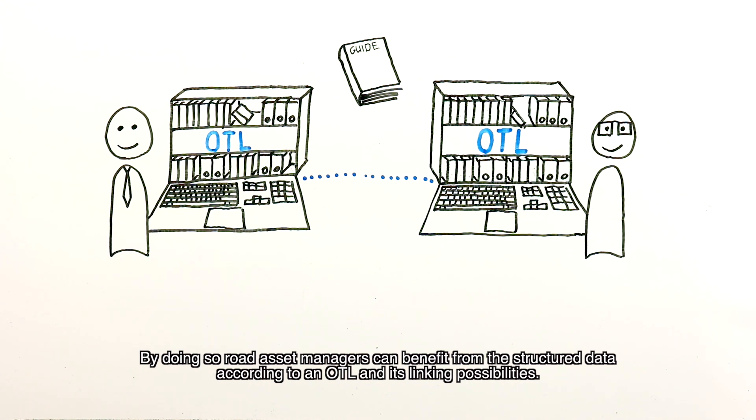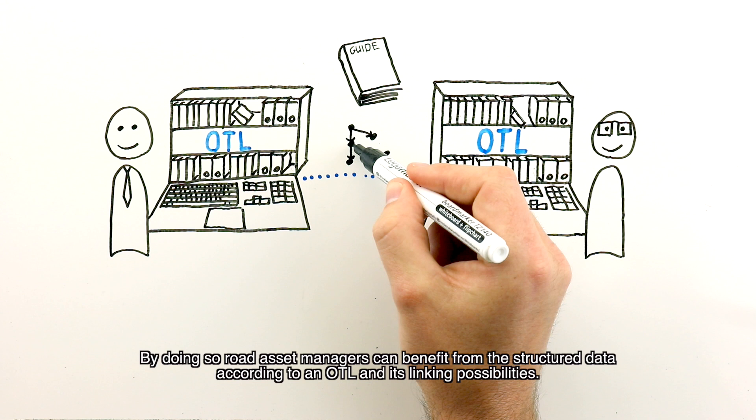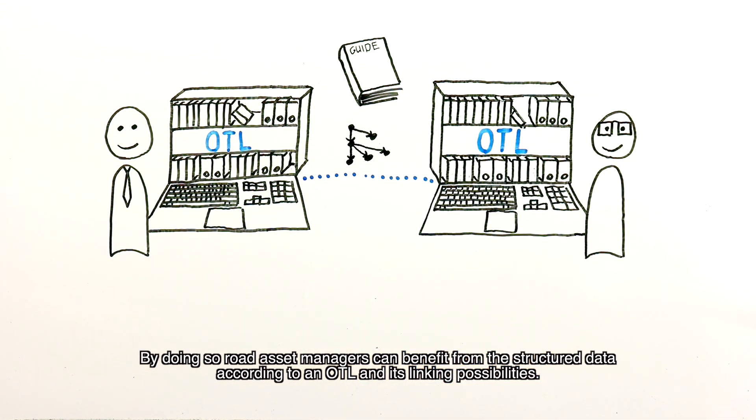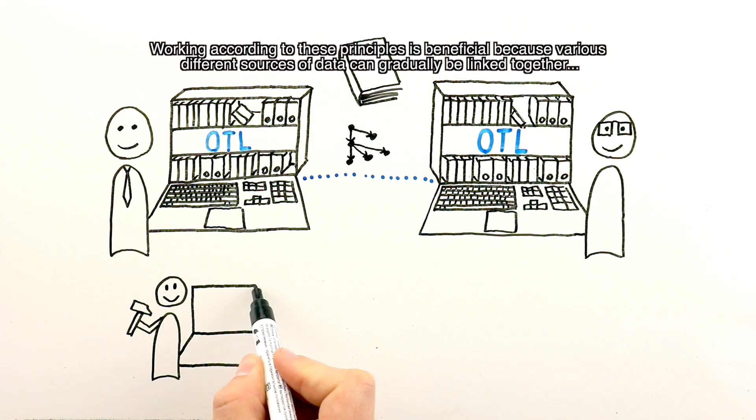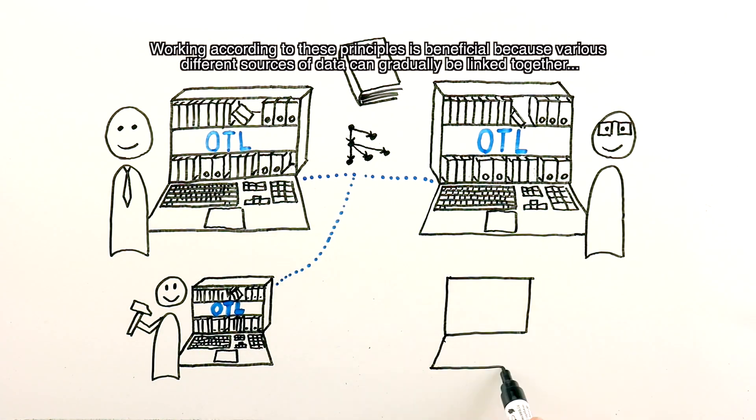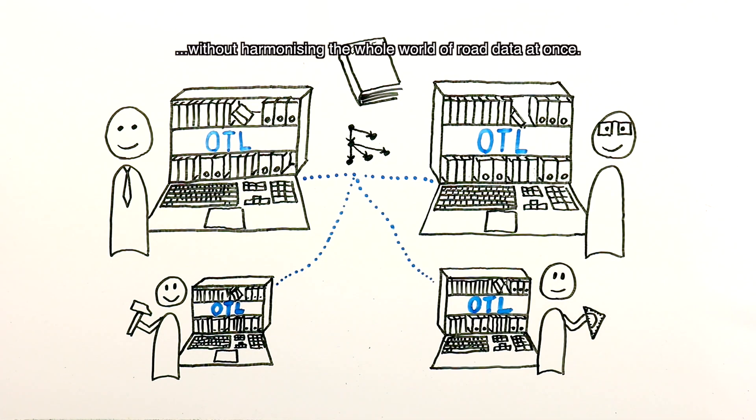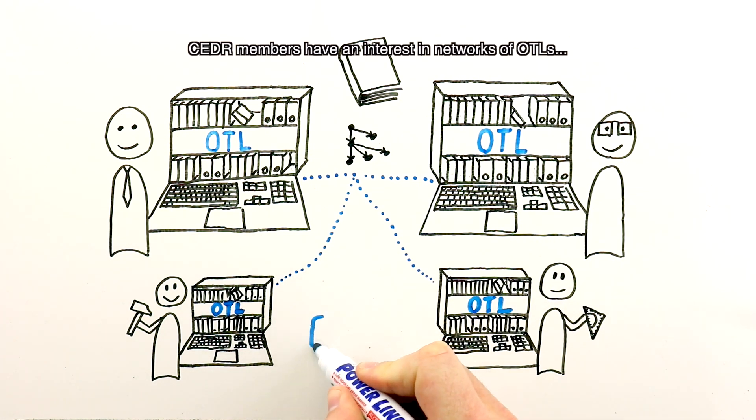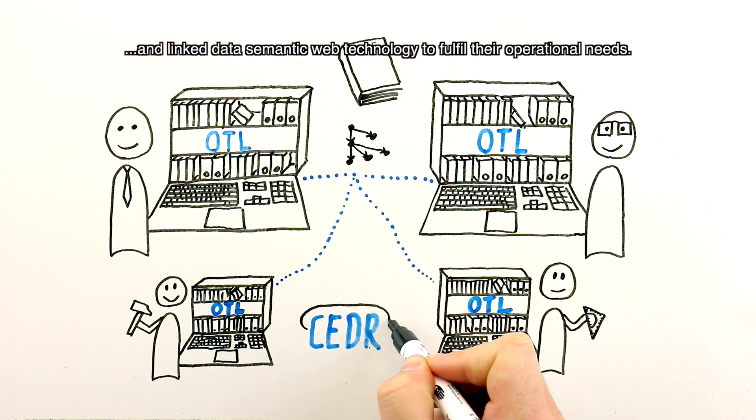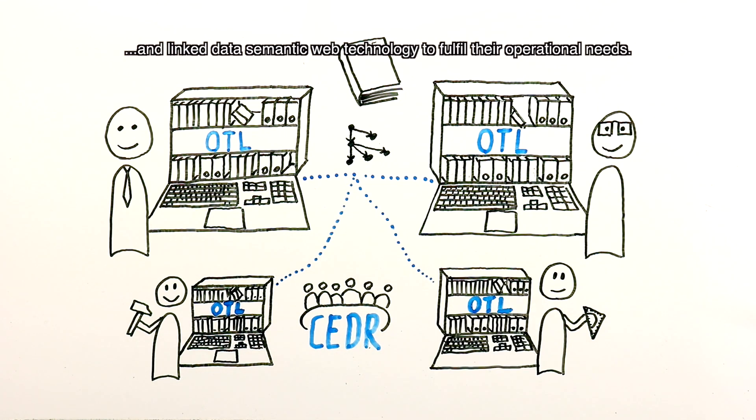By doing so, road asset managers can benefit from the structured data according to an OTL and its linking possibilities. Working according to these principles is beneficial because various different sources of data can gradually be linked together without harmonizing the whole world of road data at once. CEDR members have an interest in networks of OTLs and linked data semantic web technology to fulfill their operational needs.